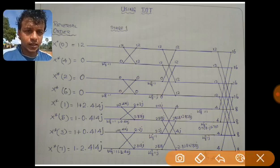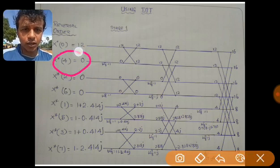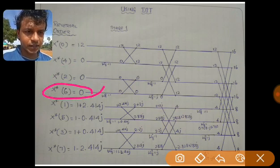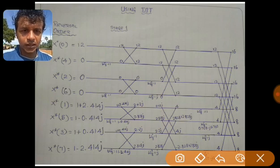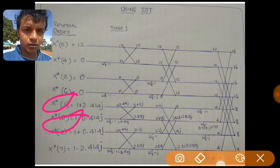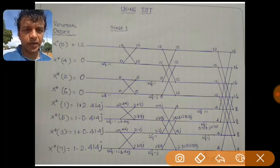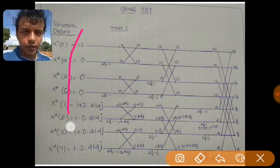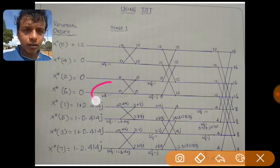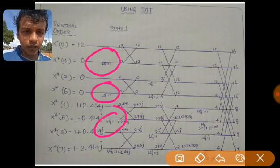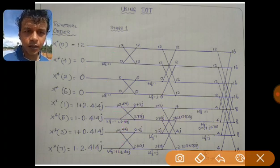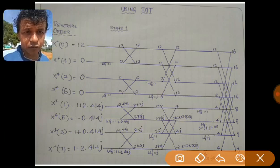Now while arranging the complex conjugate of X(k) in bit reversal order: in the zeroth position X(0) comes as it is, in the second position X(4) comes, in the third position X(2) comes, and in the fourth position X*(6) comes. In the next positions, X*(1), X*(5), X*(3), and X*(7) come. So the arrangements are made and the corresponding complex conjugates are written. The explanation regarding the twiddle factor is also given in the previous video — you can look at the link in the description.